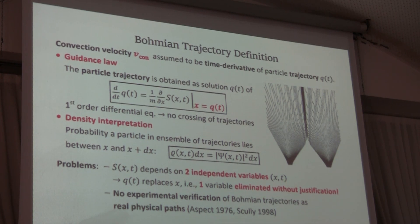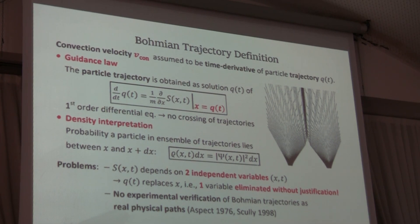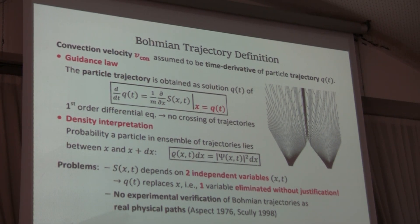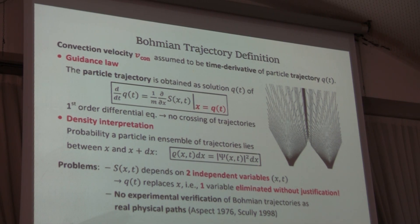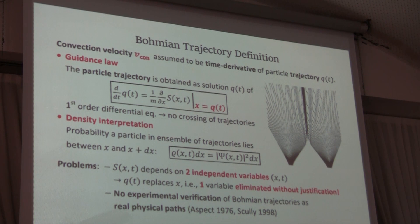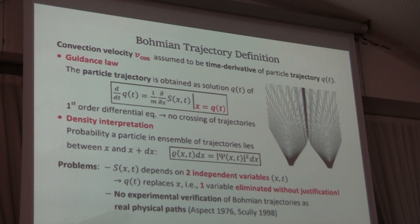Of course you can go from a higher dimensional space to a lower one. For example, if you are in three dimensions and you make a constraint that you only want to consider all points at a constant distance from a point x, then you get the surface of a sphere — a two-dimensional subspace. But the price you have to pay is that you have to introduce a constraint.